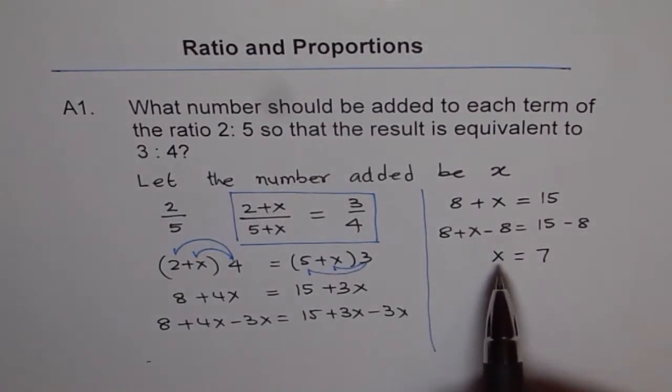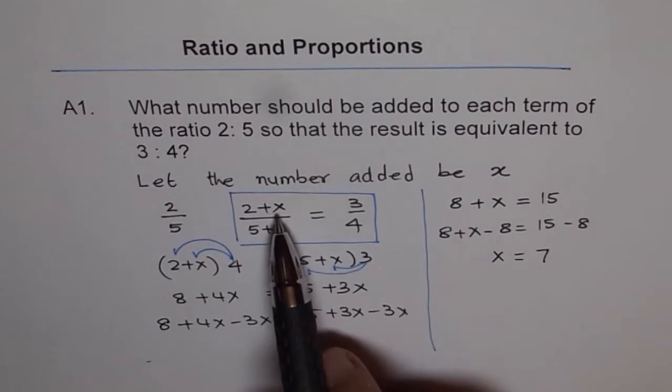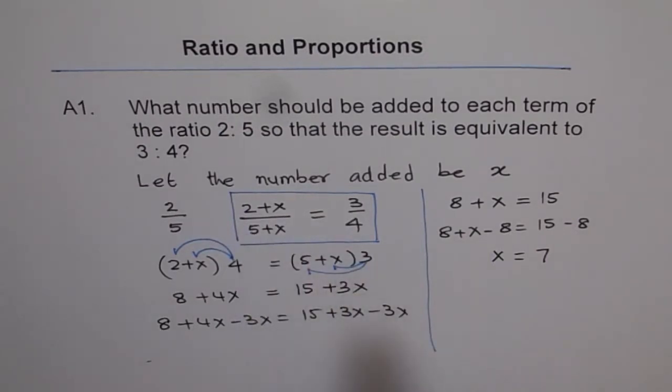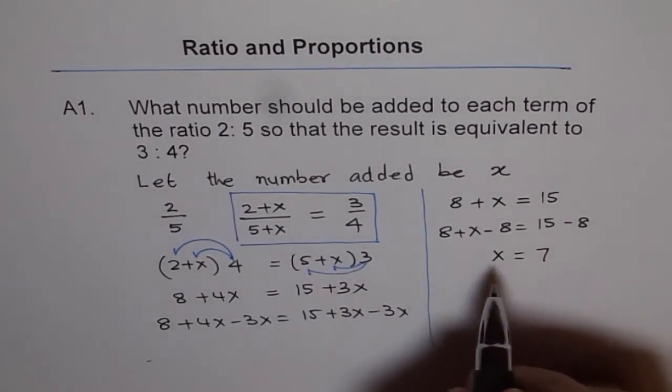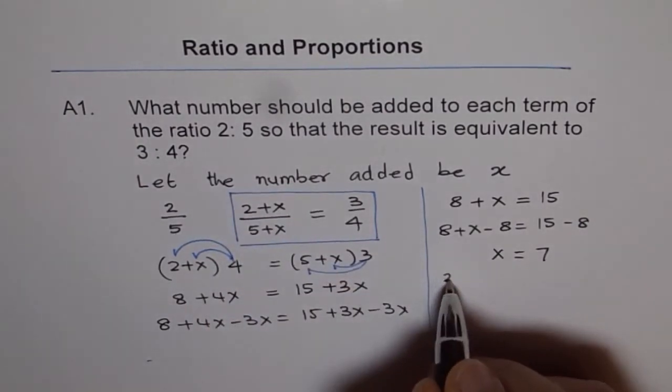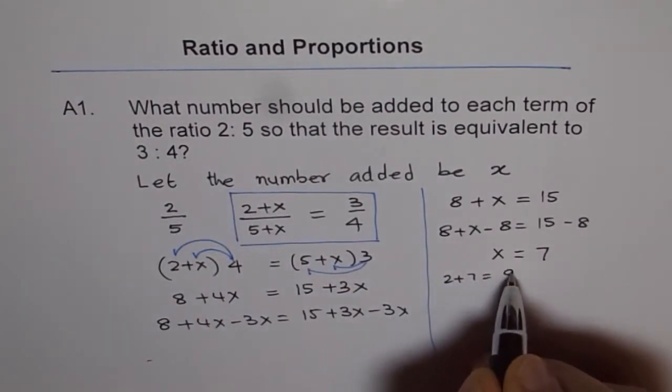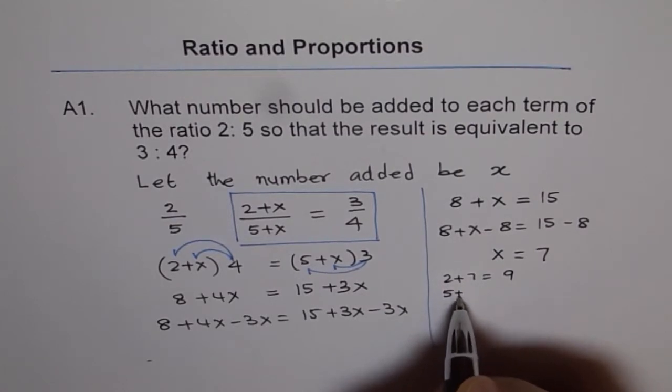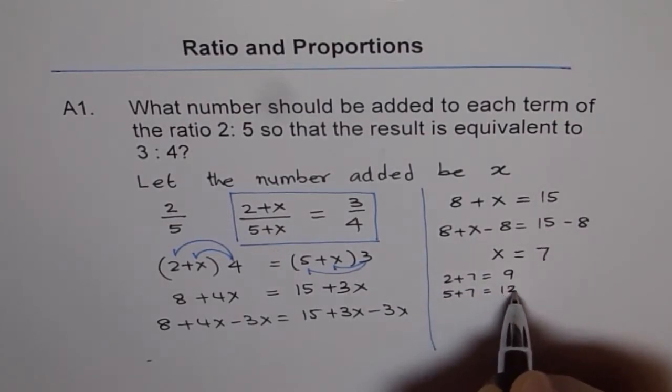2 is to 5. So, let's check this term. If I add 2 plus 7 is how much? 2 plus 7 is 9. And 5 plus 7 is 12. Now, what is the ratio?